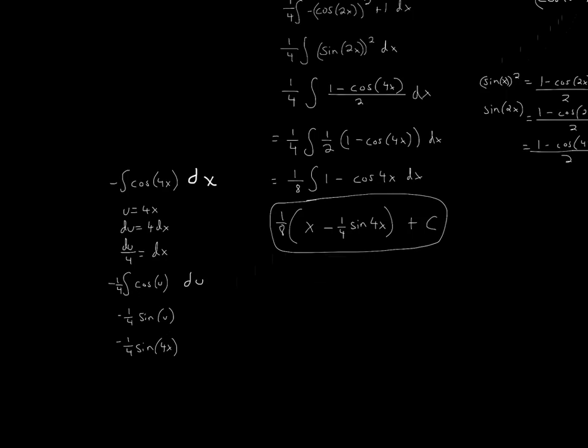Okay, so then the integral of cosine u is sine u, because the derivative of sine is cosine. And then we leave the negative 1 fourth, and we can't leave it as u. We have to plug in our substitution, which is 4x. So we plug that back in. So it's negative 1 fourth sine 4x. So we just plug this entire expression right here.